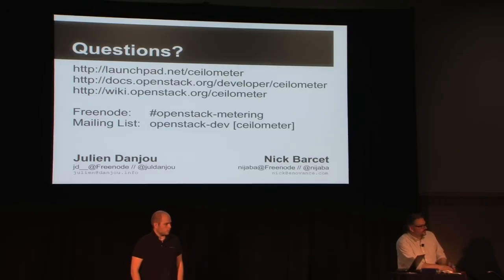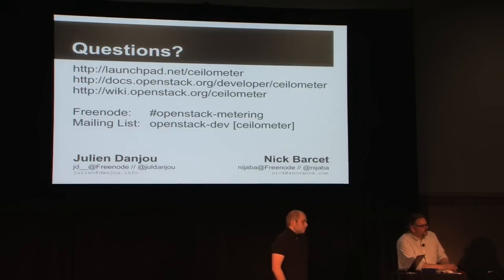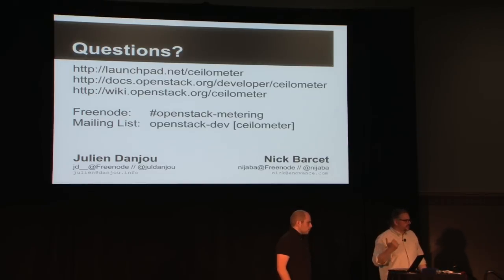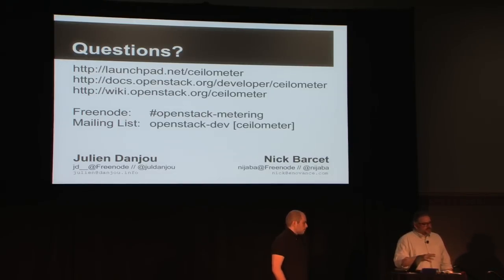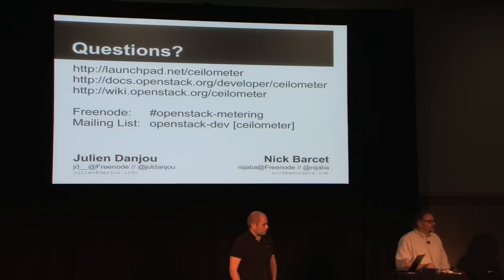Question: does Ceilometer have any API to collect unavailability so that billing and service credits can be calculated? Unavailability is something you can derive from the data we already collect. However, it will depend on what you mean by availability — whether it's availability of the infrastructure, of the instance, or of a service running on top of the instance. We may or may not have the correct metrics for each case.